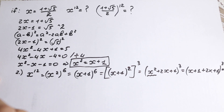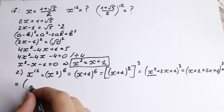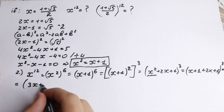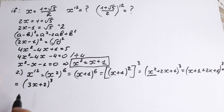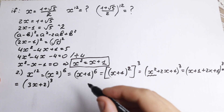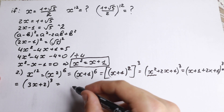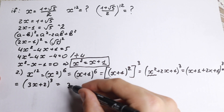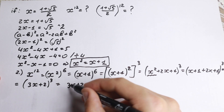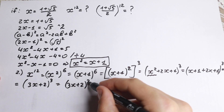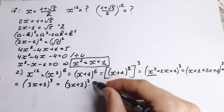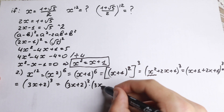Adding those terms together, we get (3x plus 2) raised to the third power. We can write this as (3x plus 2) squared times (3x plus 2) once more. Using the formula (a plus b) squared equals a squared plus 2ab plus b squared, we raise 3x plus 2 to the square power, giving us 9x squared plus 12x plus 4, multiplied by (3x plus 2).